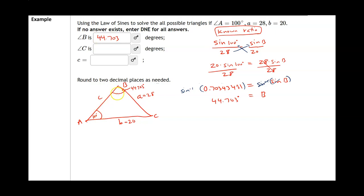Knowing two angles, we can find the third since they all add up to 180. So 100 degrees plus 44.703 plus angle C equals 180. Adding gives 144.703 plus angle C equals 180. Subtracting, angle C equals 35.297 degrees.